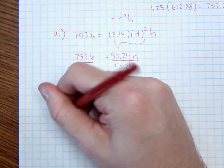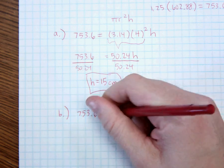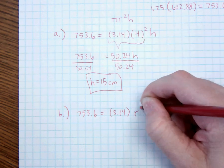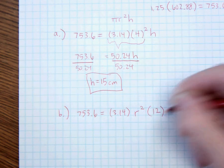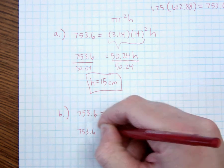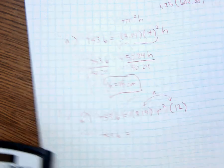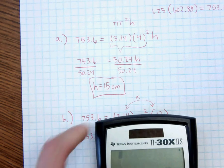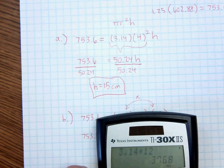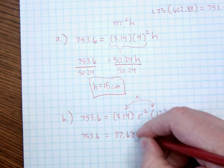b says do the same thing, but this time, so 753.6, π is still 3.14, your r is going to change. So, that's going to go back to r squared, and our original height is still going to remain the same. So, again, I want to find, basically, what these two numbers are together. So, I want to multiply those. So, 3.14 times 12 gives me 37.68. So, essentially, this is 37.68 times r squared.